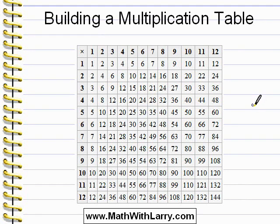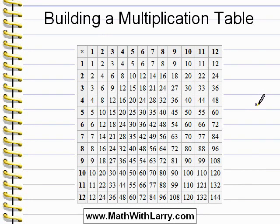Recall that multiplication has a zero property. What that means is simply that any number times zero equals zero, which makes sense. Zero groups of something is just zero.